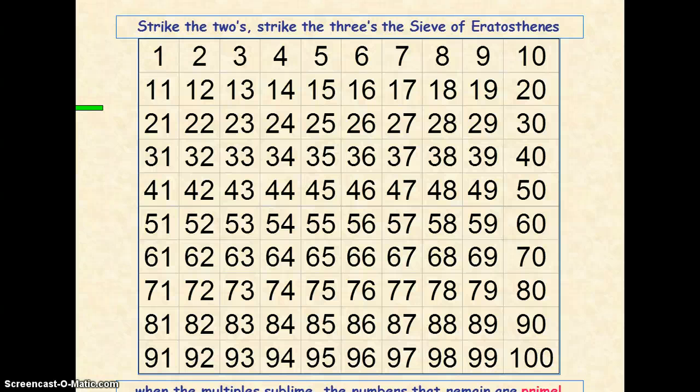First of all, we've got to understand what a prime number is. A prime number is a number with only two factors, two numbers that multiply to make your number. So let's have a look at the number 1. The number 1 only has one factor, itself. Therefore, 1 is not prime.